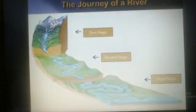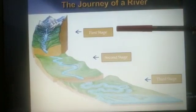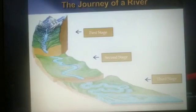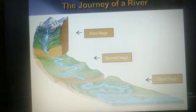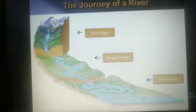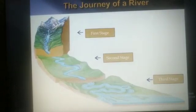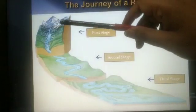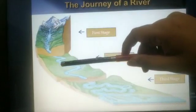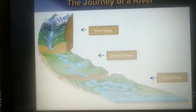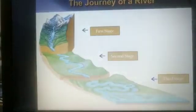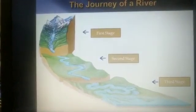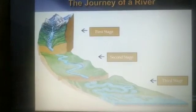Now we will study about the journey of a river. A river has three stages: the first stage, second stage and third stage. The first stage is also known as the upper course. The majority of rivers originate from the mountains, and in this course the river has very little water as it flows down the slopes. It gains speed and cuts a deep valley. A waterfall is one example of the first stage, the upper course.